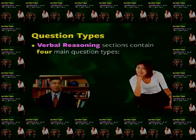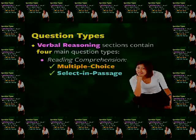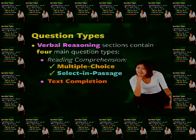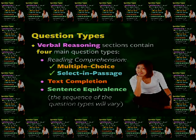The verbal reasoning sections on the GRE contain four main question types: two types of reading comprehension questions — multiple choice questions and select in passage questions — as well as text completion questions and sentence equivalence questions. Within a verbal reasoning section, these four types of questions will likely bounce around from one type to another. The reading comprehension passages will include both short and long reading passages, each accompanied by some questions on the contents, structure, and style of the passage. You can never predict exactly what sequence the question types will appear, so simply be prepared to handle any question type in any sequence.